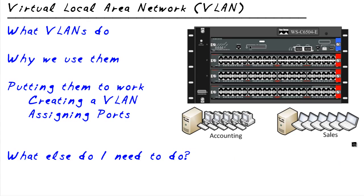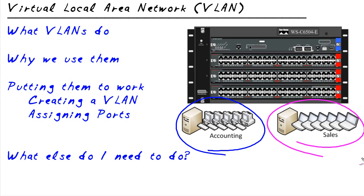So what about virtual local area networks? Why do we need them? Well, one day the accounting department grew and they have all these PCs, and the sales department grew. What they had in mind was they want accounting to be on the network and sales to be on the network, but not on the same network. And somebody said, no problem, we'll just get two switches. Here's an example of a really big switch — it's got about 144 Ethernet gigabit ports on it. We could just plug everybody in, but then accounting and sales wouldn't be separated.